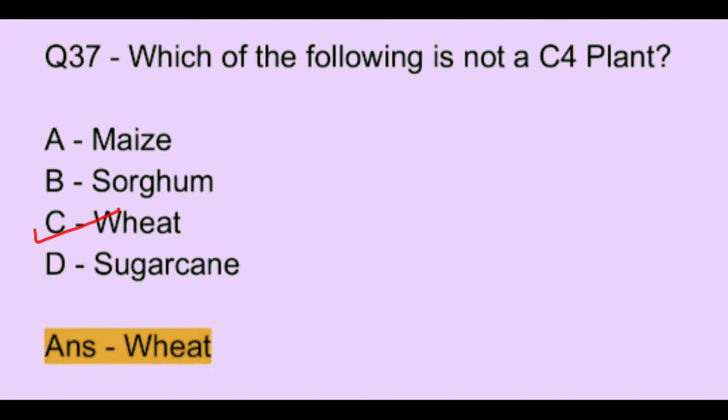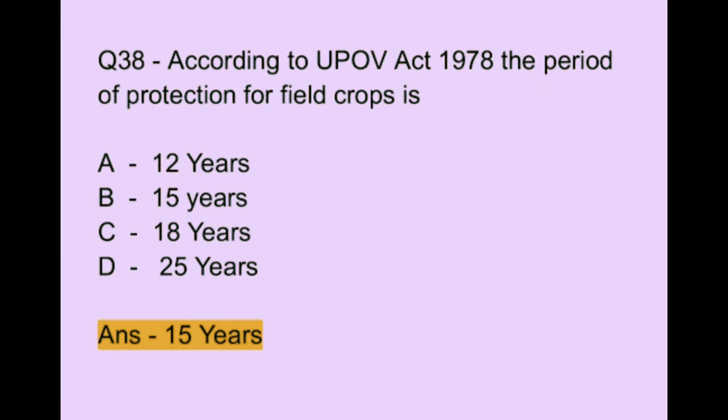Question number 38. According to the UPOV Act 1978, the period of protection for field crops is: Option A: 12 years. Option B: 15 years. Option C: 18 years. Option D: 25 years. The correct answer is option B, which is 15 years.